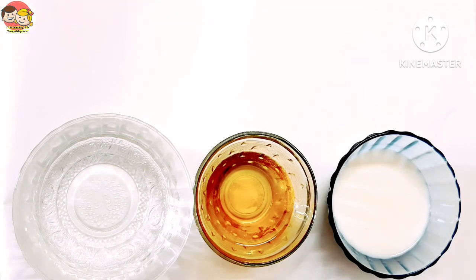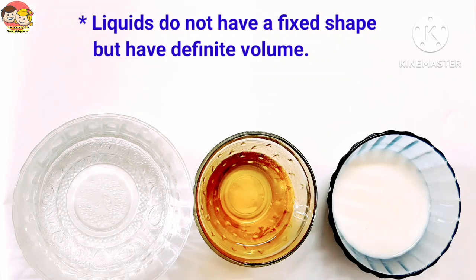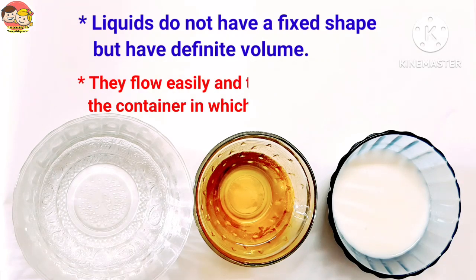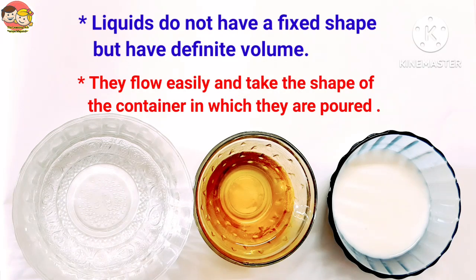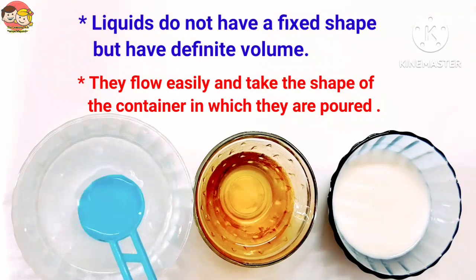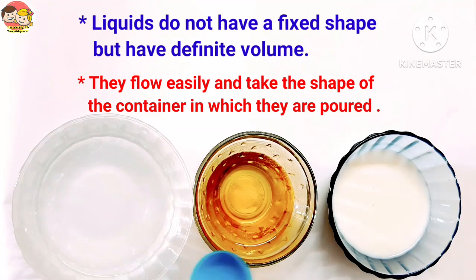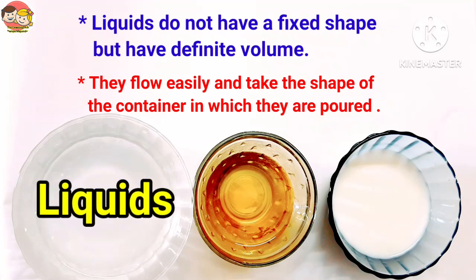Liquids — things such as water, oil and milk do not have a fixed shape but have a definite volume. They flow easily and take the shape of the container in which they are poured. Such things are called liquids.